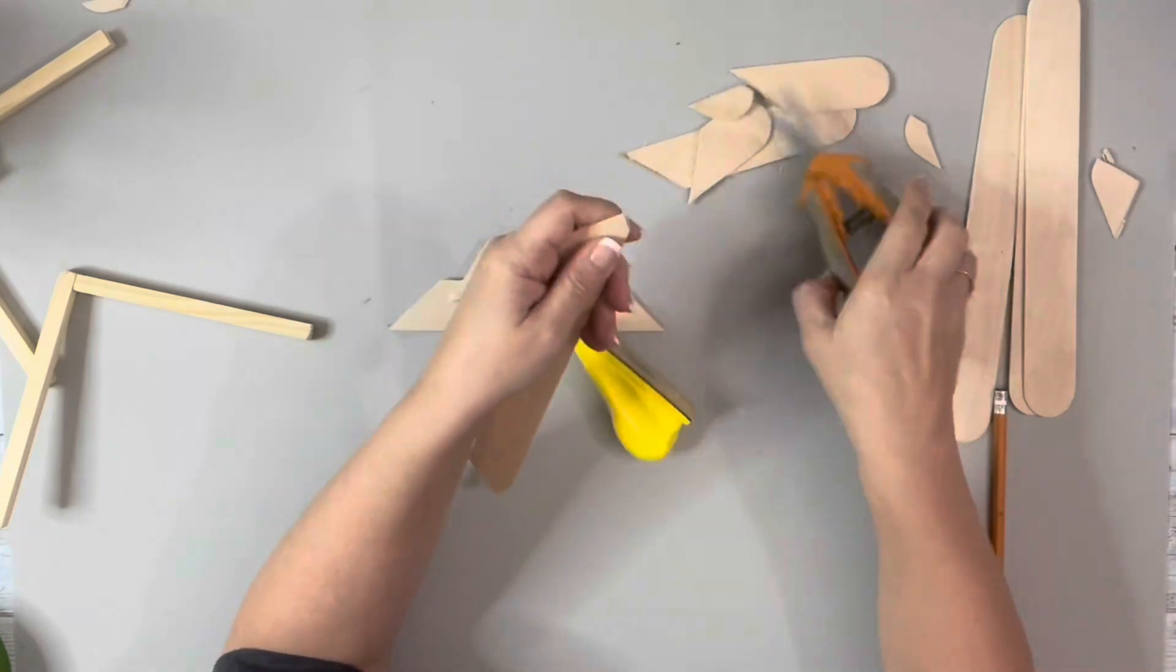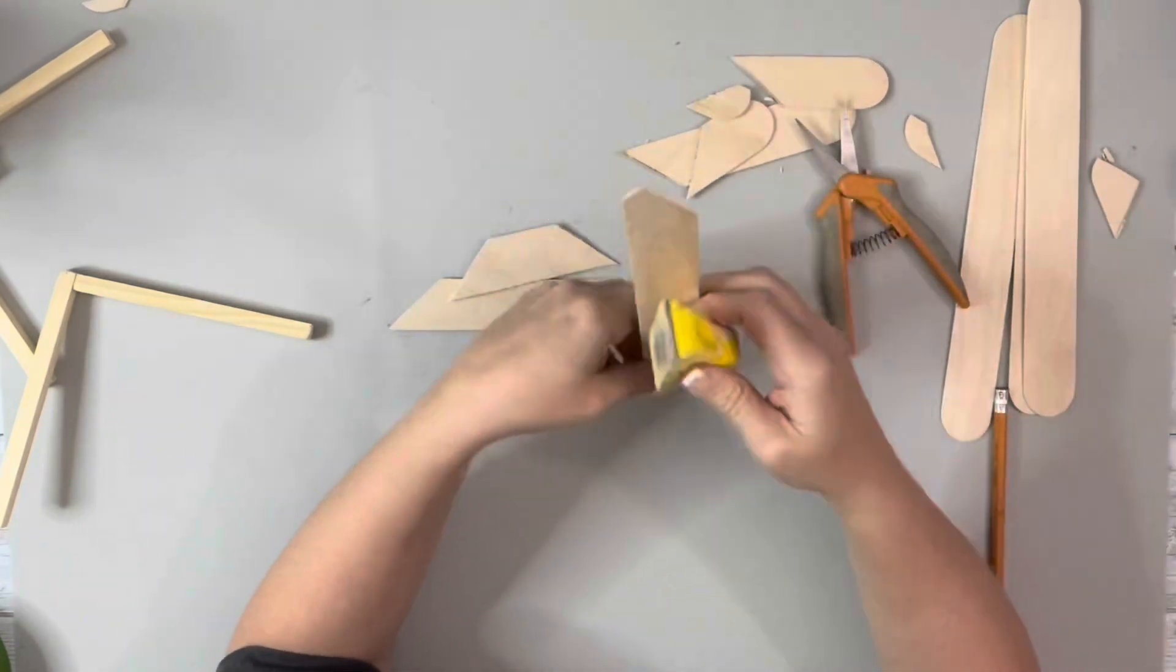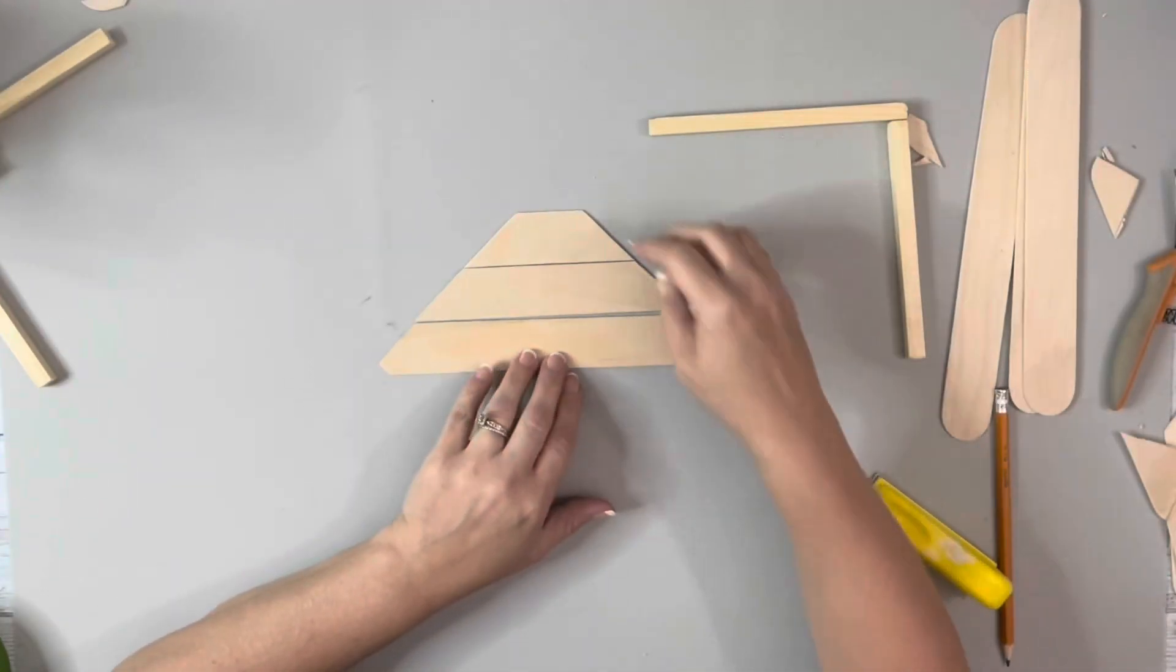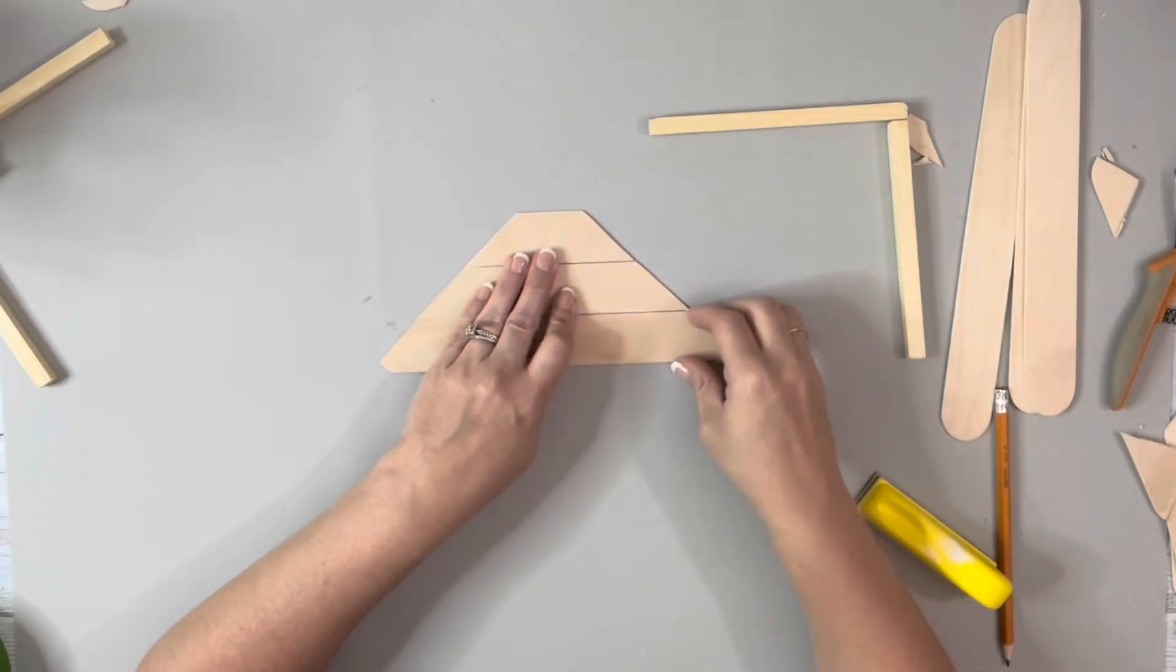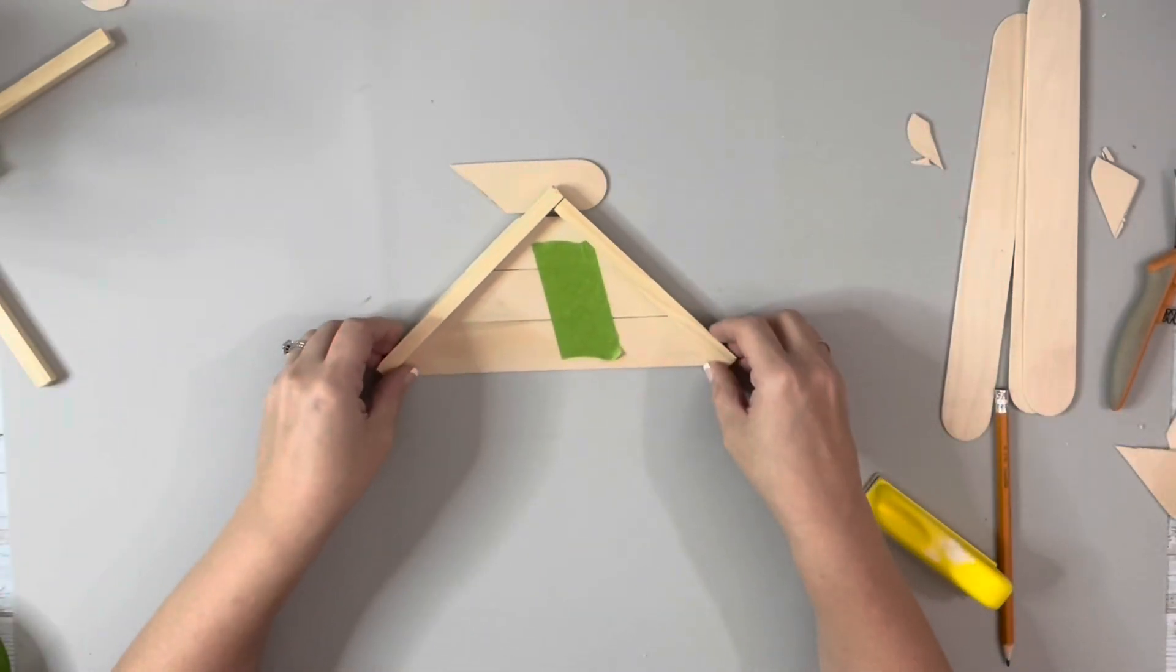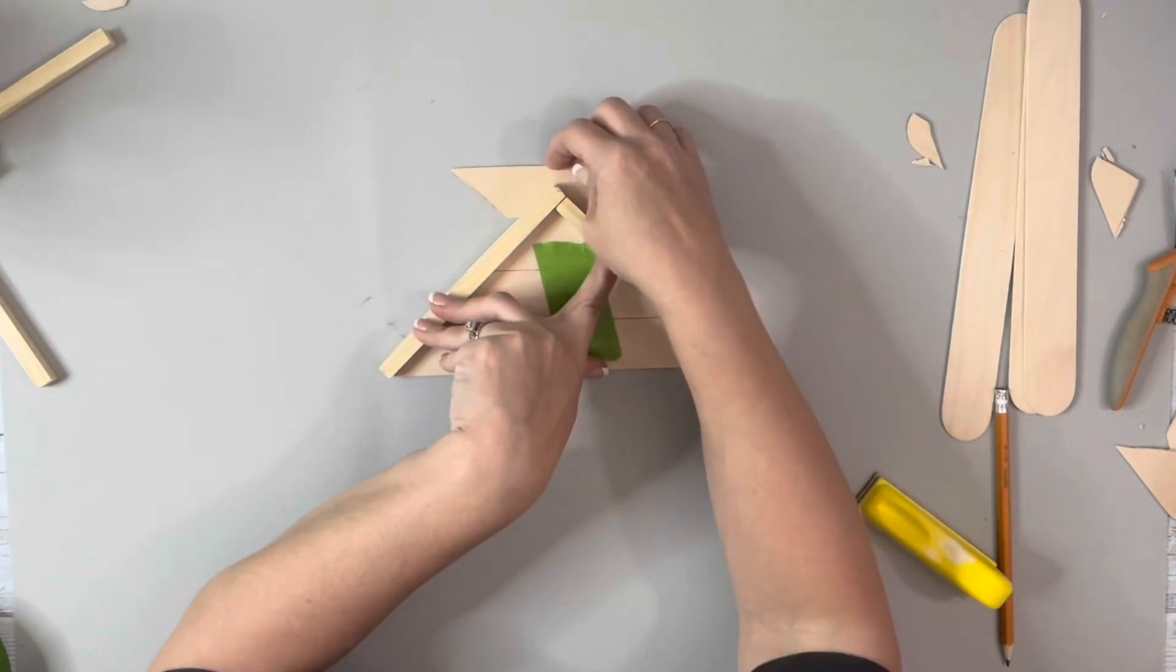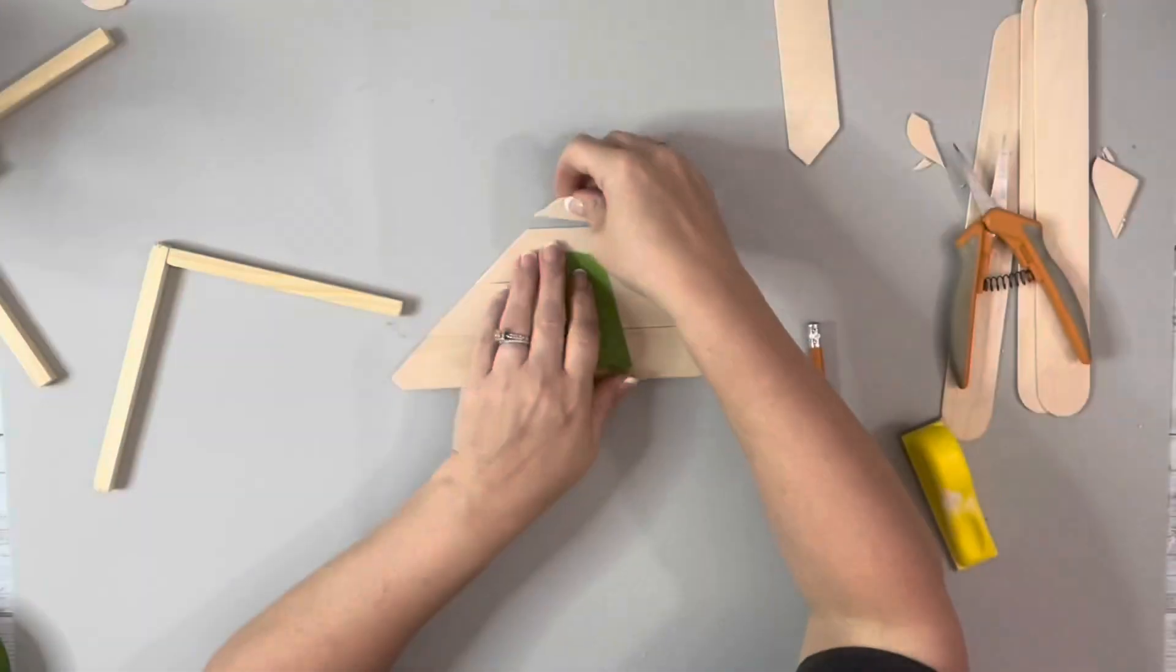After those were cut, I sanded all the edges where I had made those cuts. Then I set those three up against each other how they're going to be placed on the dowels, and I needed a little bit more on the point where the dowel is at the angle, so I just took one of my scrap pieces of craft stick and traced out that little piece, cut that out, and sanded it as well.